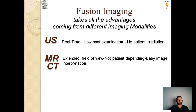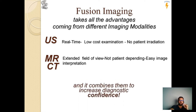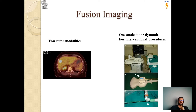CT and MRI, in contrast, have higher spatial resolution and are not patient-dependent, but they produce static images and bring radiation exposure to patients. So we can take all these advantages and combine them to increase diagnostic value. Fusion imaging combines one static and one dynamic modality for interventional procedures.